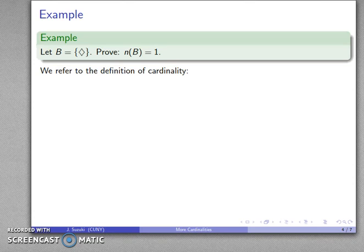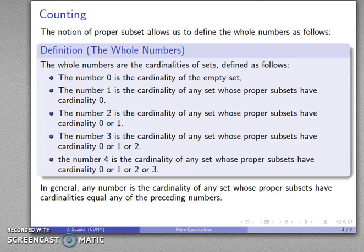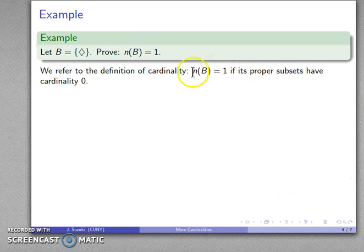If I want to prove it, I have to go back to my definition of cardinality — what does it mean that something has cardinality one? The number one is the cardinality of any set whose proper subsets have cardinality zero. So: cardinality is one if the proper subsets all have cardinality zero.